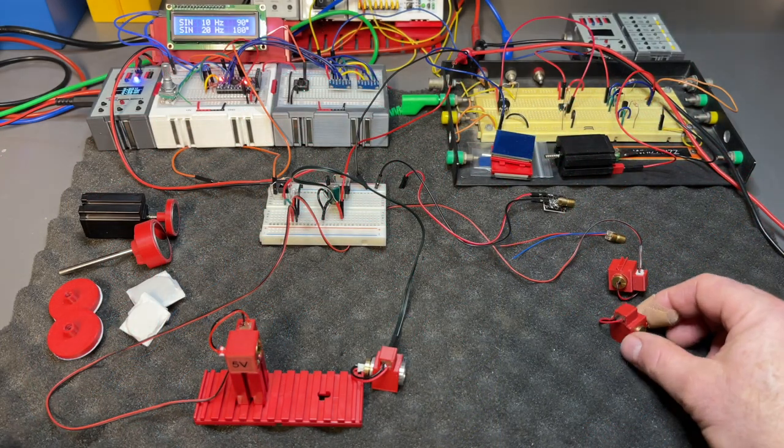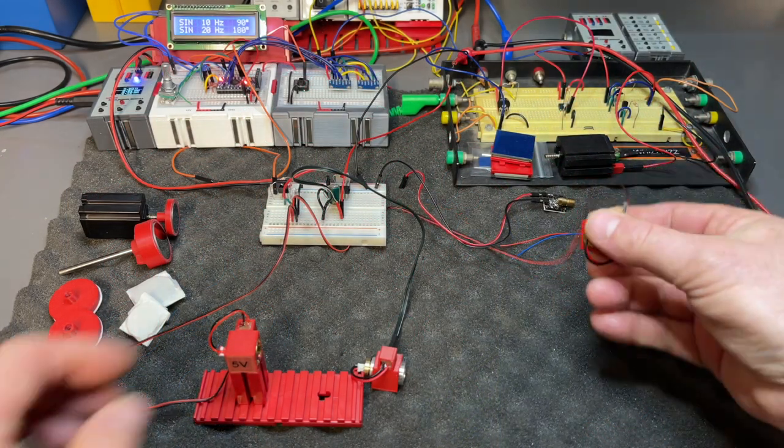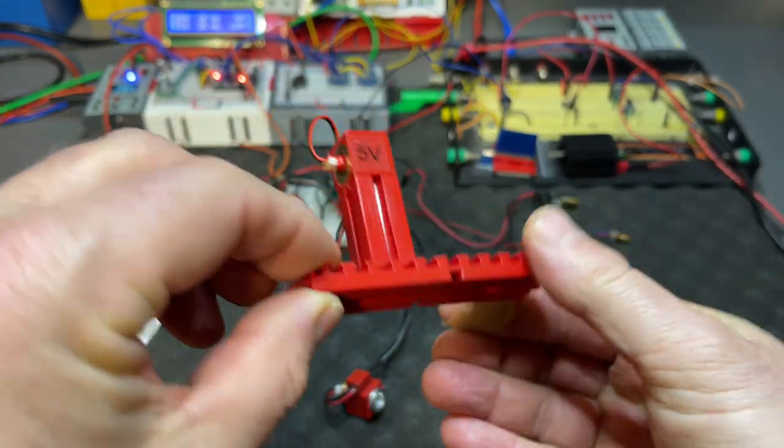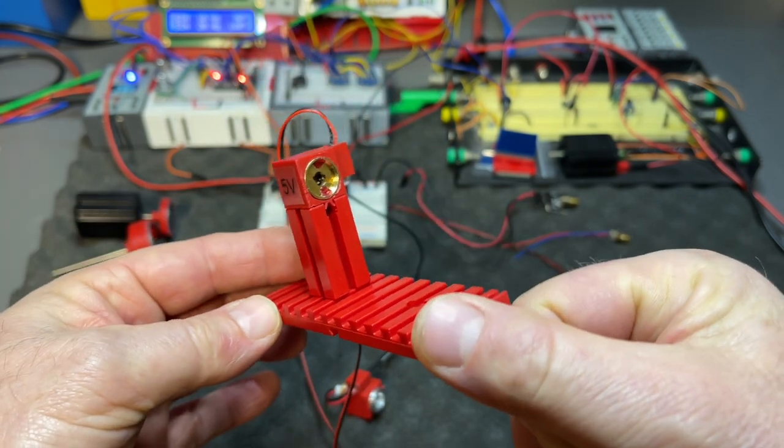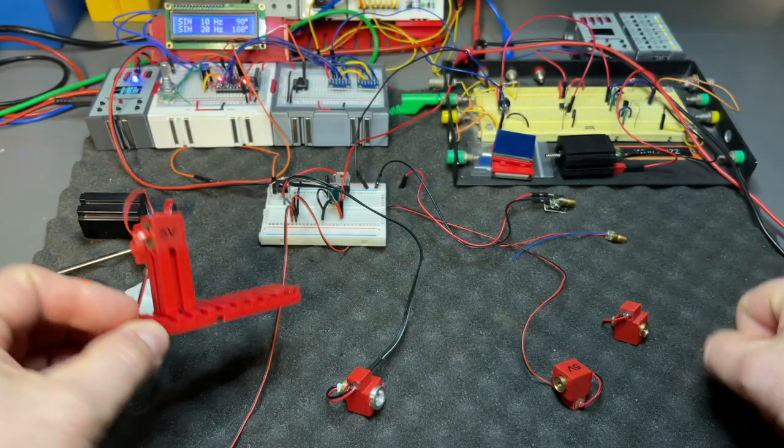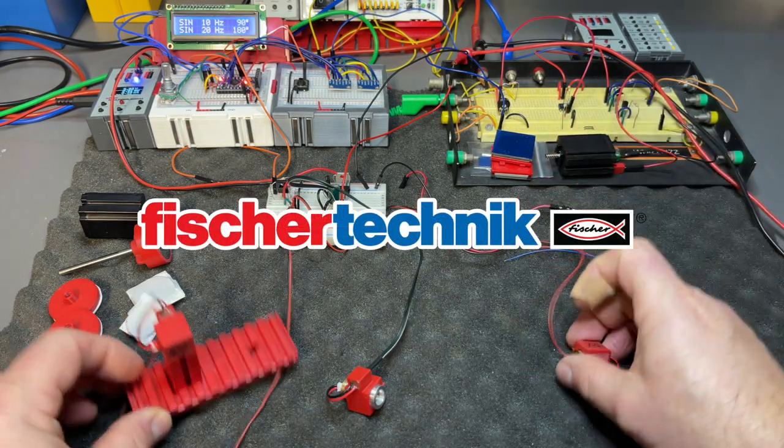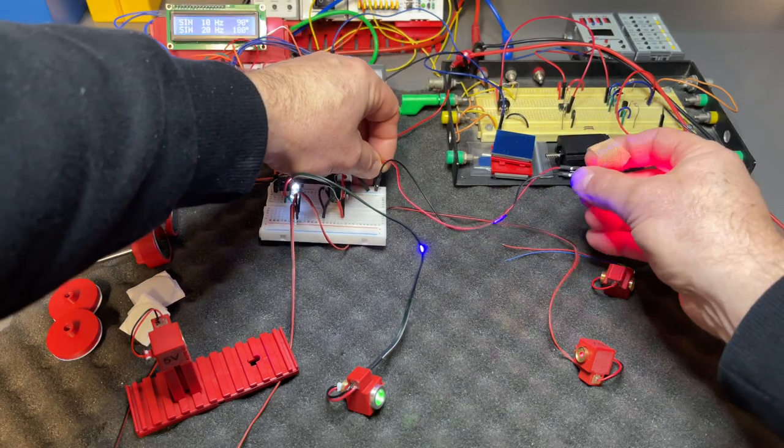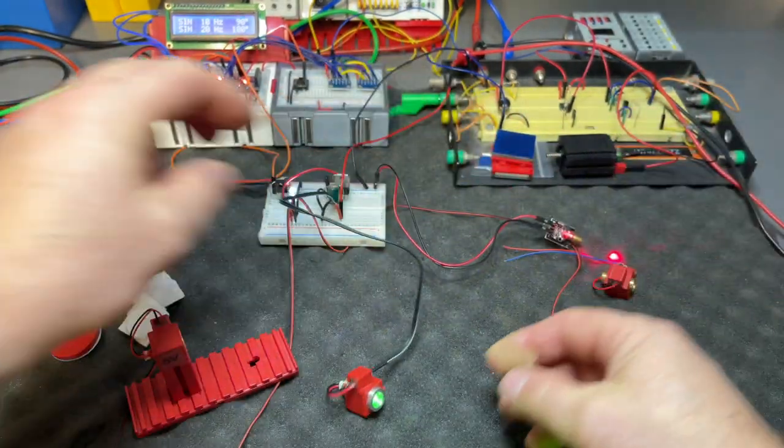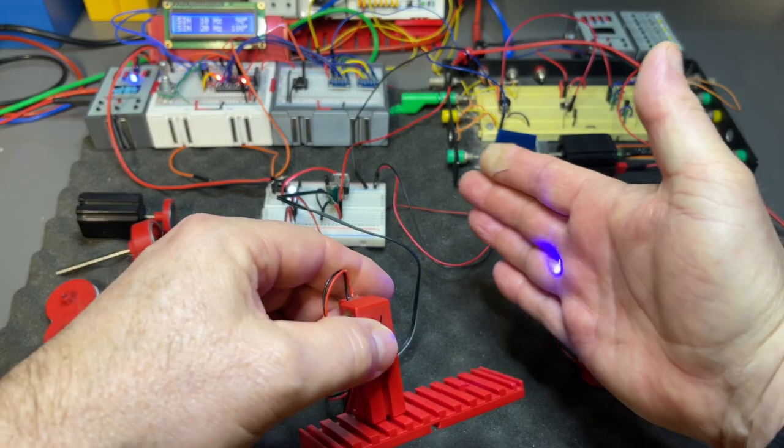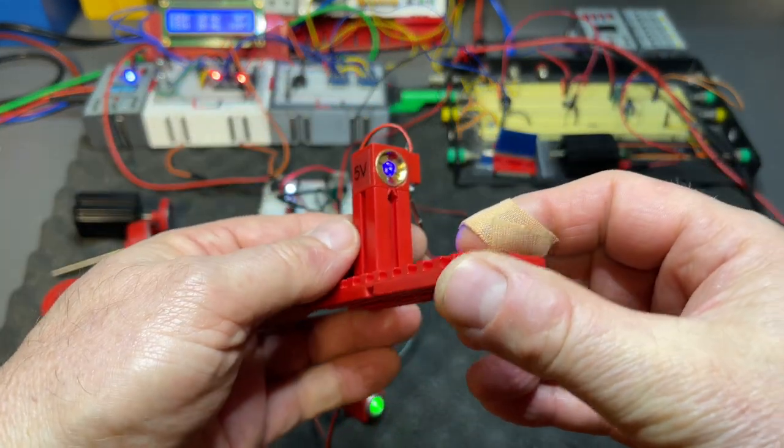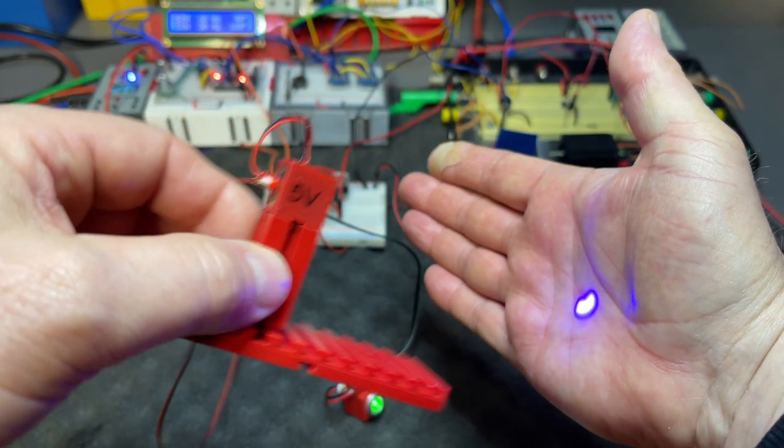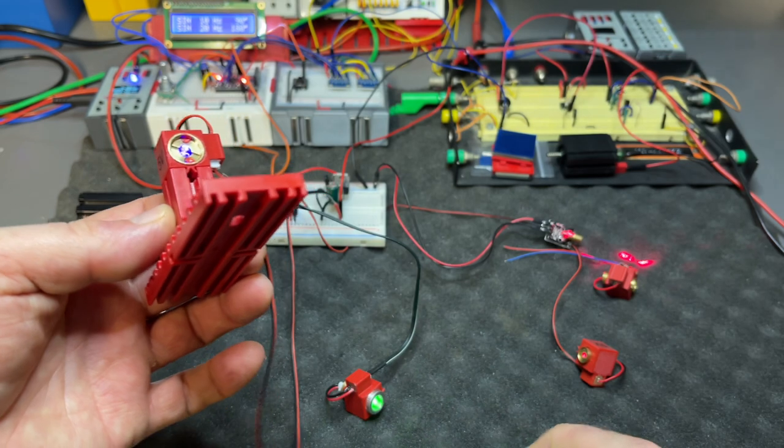For various experiments and projects in the past I have already collected a number of different semiconductor lasers like this. And as you can see I've printed some holders for them so I can use them with the Fischer Technik construction material. These are red lasers 650 nanometers of frequency with powers of 5 and 50 milliwatts and this is a blue laser. I looked it up it has 450 nanometers of frequency and it's 100 milliwatts strong.